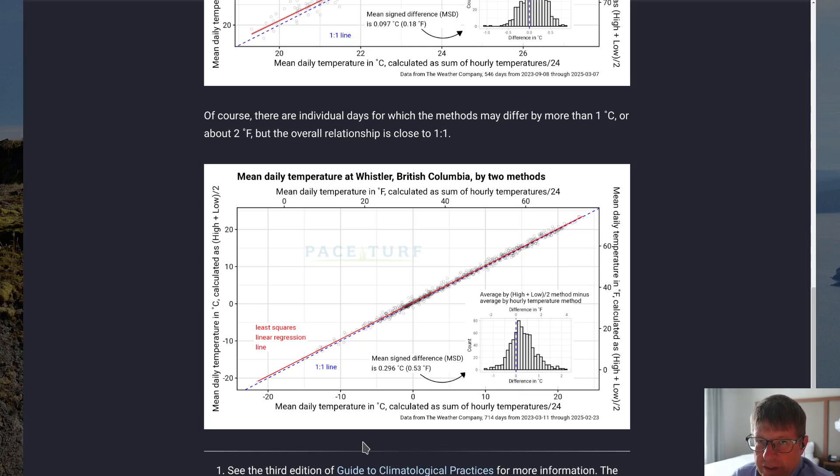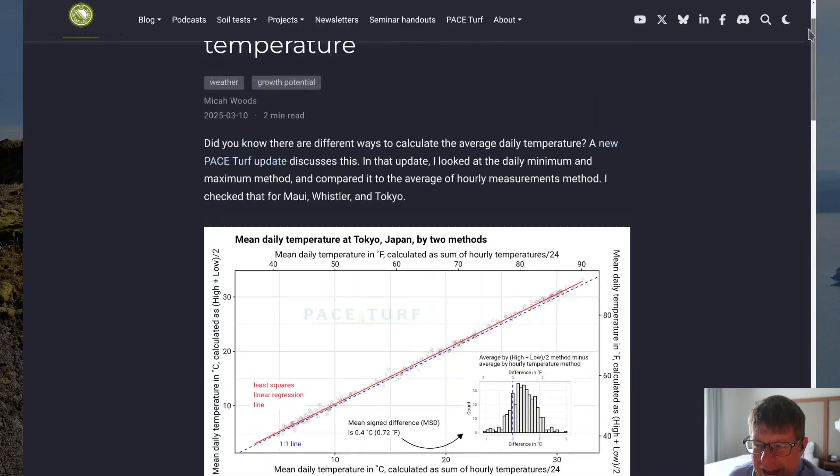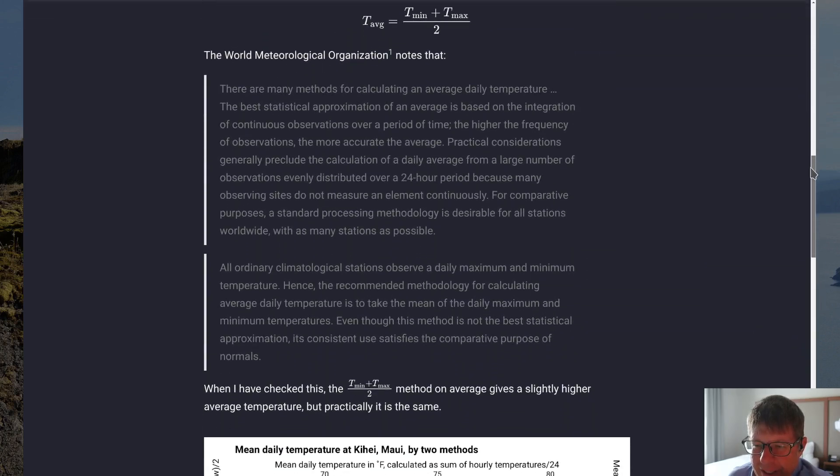PaceTurf, for the growth potential calculations, everything you see on the PaceTurf website for growth potential, that's calculated using the same method that the World Meteorological Organization is recommending for consistency, which is the maximum plus minimum divided by two. However, I like to be as accurate as possible, and if you see what the World Meteorological Organization says, they say the best statistical approximation of an average is based on the integration of continuous observations over a period of time, the higher the frequency of observations, the more accurate the average.